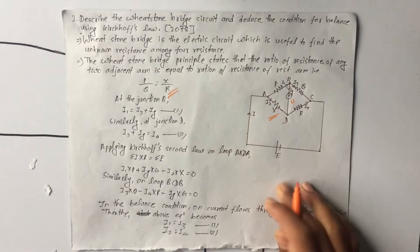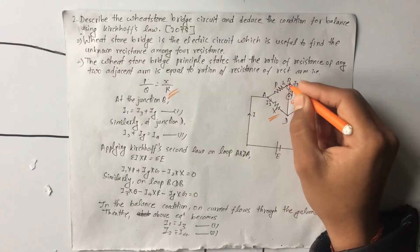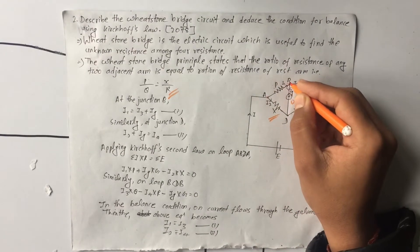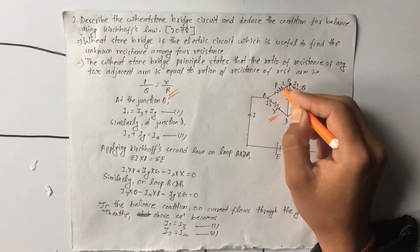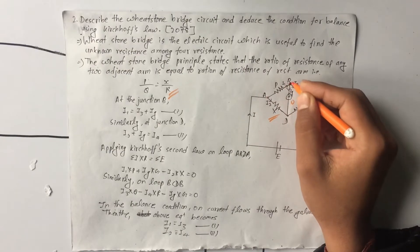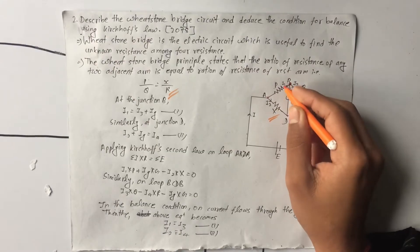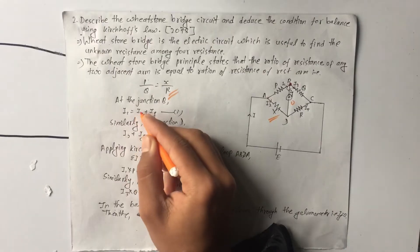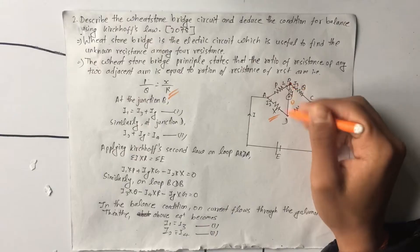The current I splits and flows through the circuit. At junction B, we apply Kirchhoff's Current Law. Current entering the junction is positive and current leaving is negative. So I1 equals I1 plus I3, and the current Ig flows through the galvanometer at junction B.